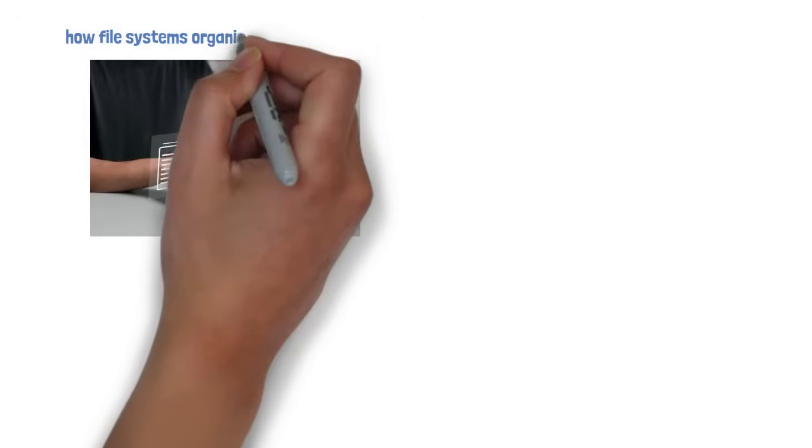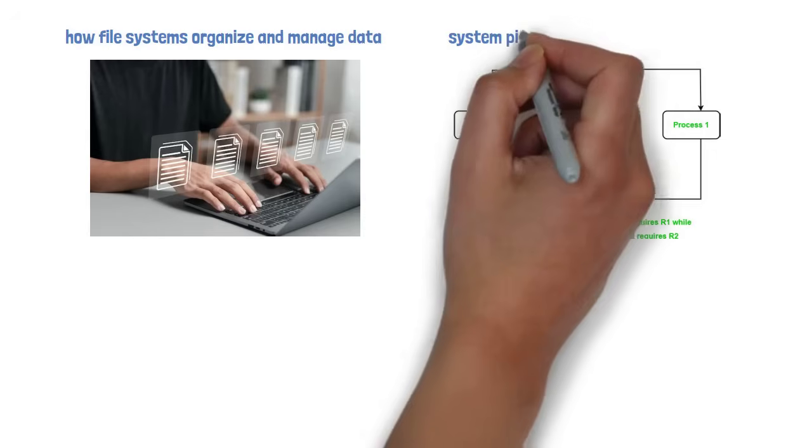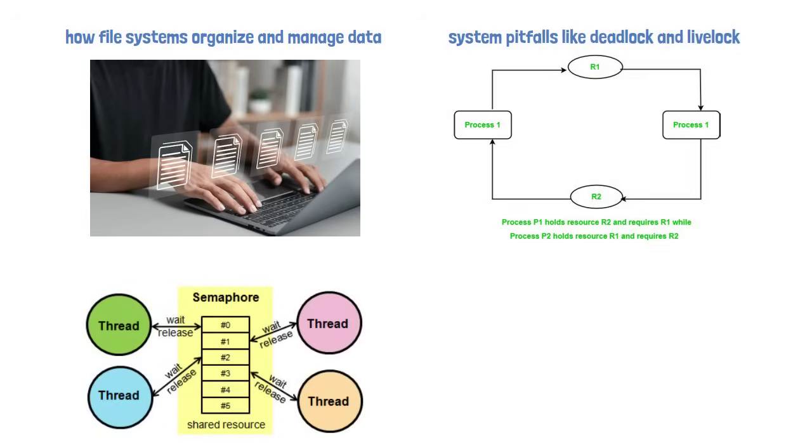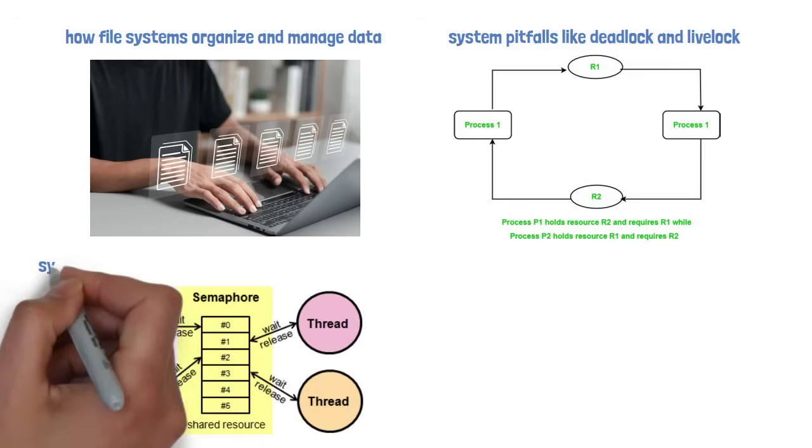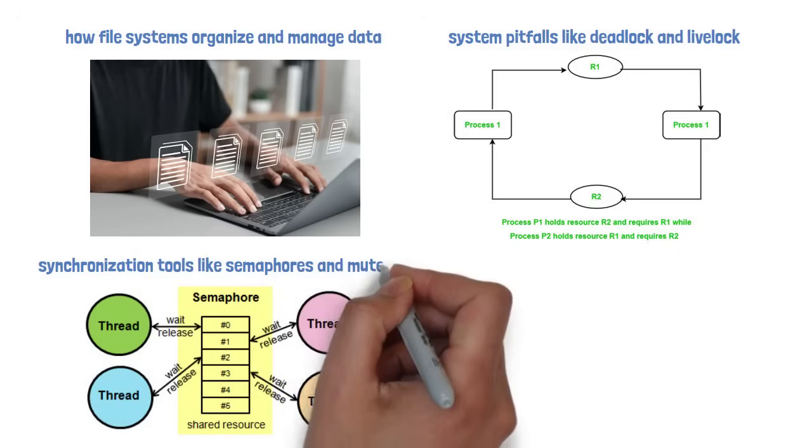Then we'll explore how file systems organize and manage data. And of course, we'll talk about system pitfalls like deadlock and livelock, and how they can freeze up your system. To solve these problems, we'll introduce you to synchronization tools like semaphores and mutexes.